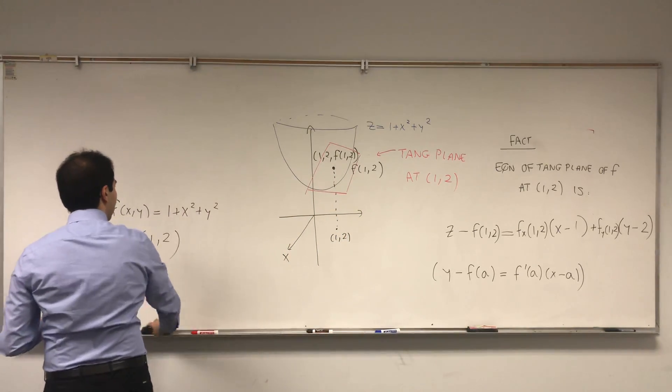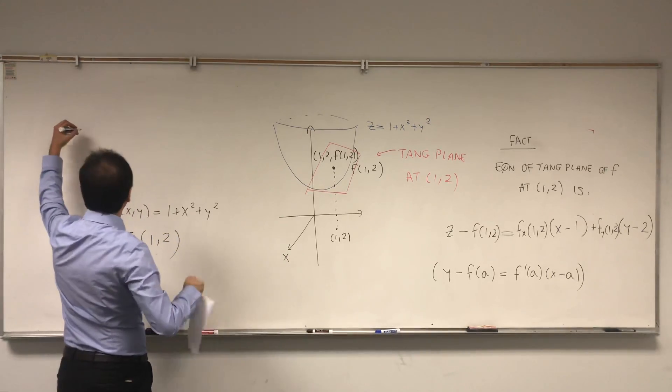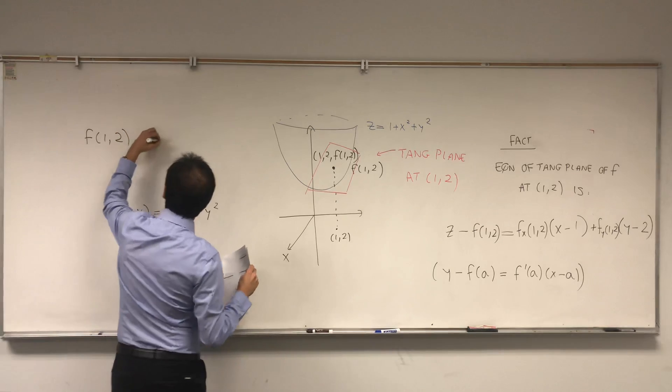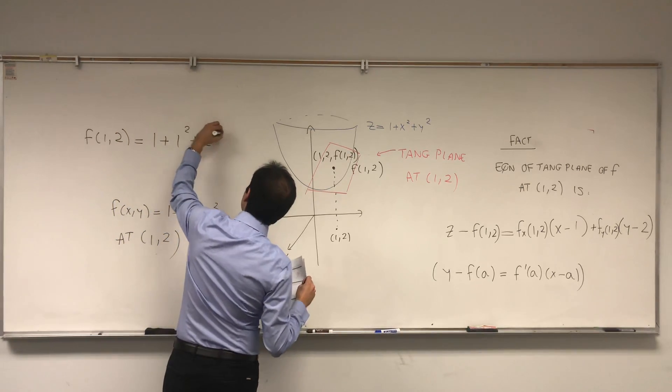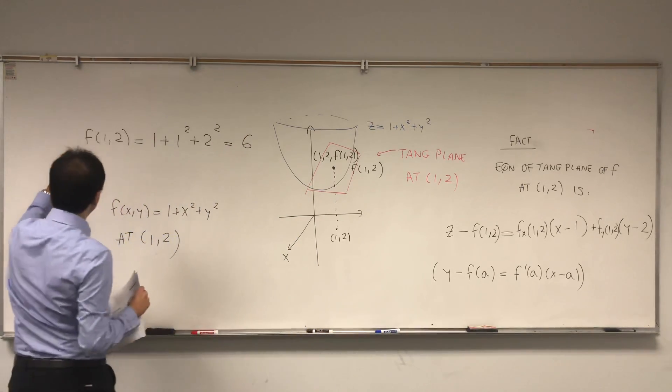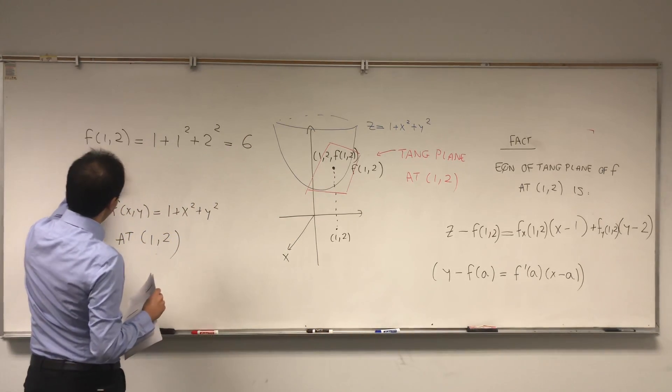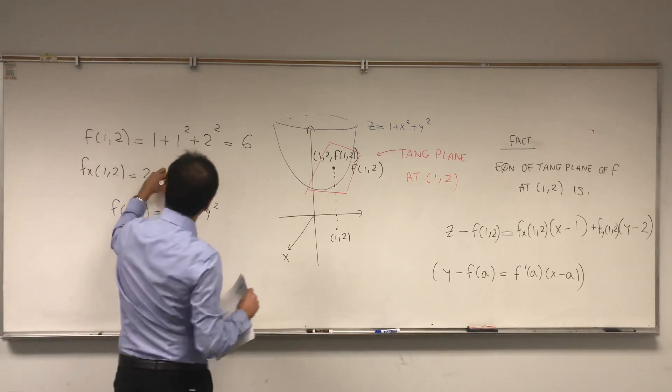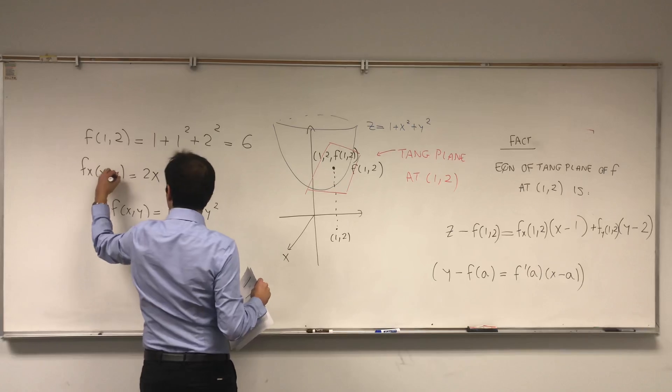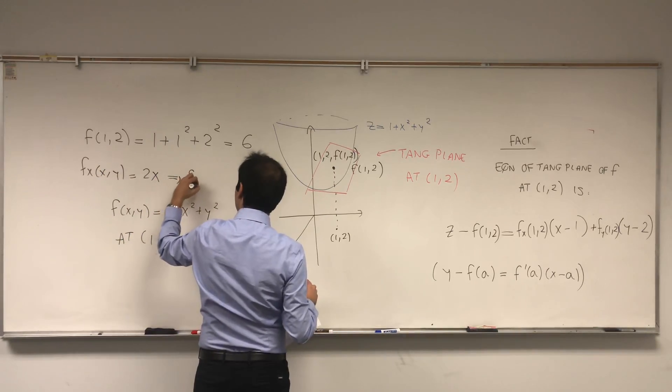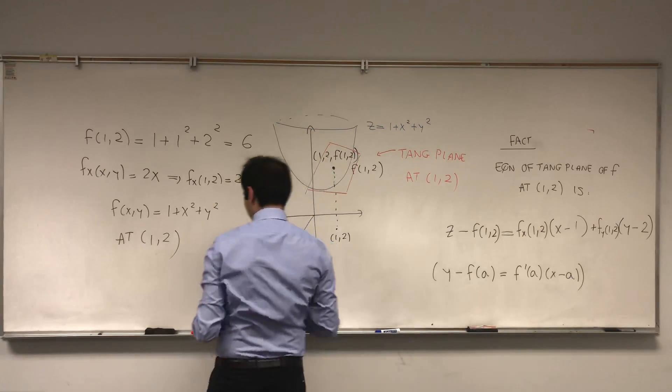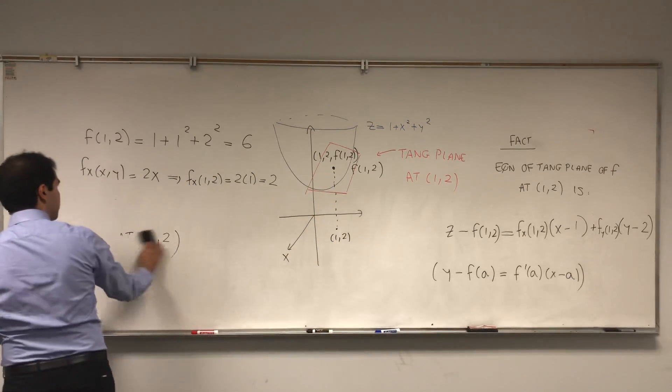And what this looks concretely is as follows. Well, let's calculate f at the point first of all. So f(1,2) = 1 + 1² + 2². And I believe this becomes 6. Now let's differentiate f. fx is just 2x. And at the precise point, it becomes 2 times 1, which is 2.